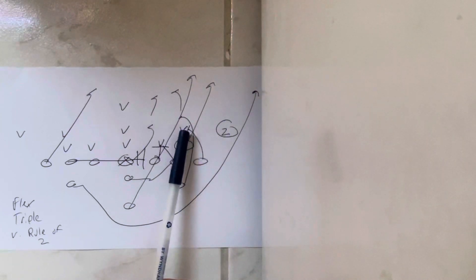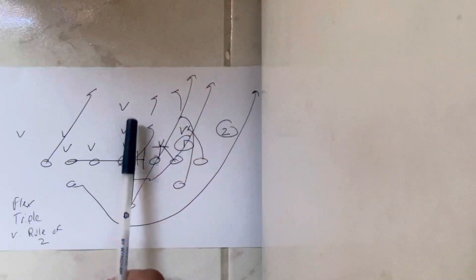He'll block the stacked backer, and then he'll end up on the mic to the free safety. So if the mic can get over the top of that block, good luck with that.